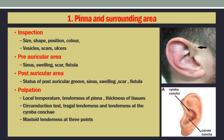The post-auricular area also has to be seen for the post-auricular groove, sinus, swelling, scar, and fistula. Palpation is then carried out for local temperature, tenderness of the pinna, and thickness of tissues. Tenderness of the pinna is usually assessed by the circumduction test, where the pinna is rotated and checked for tenderness. Then tragal tenderness is tested by pressing the tragus towards the external canal and looking for pain.